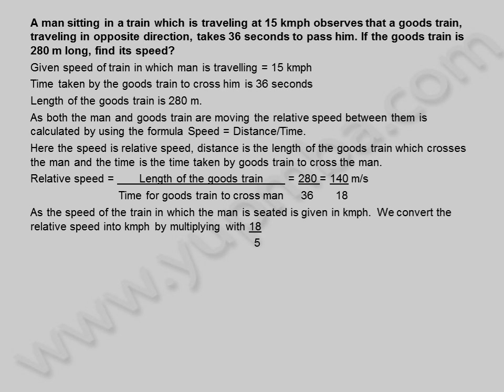As the speed of the train in which the man is seated is given in kilometers per hour, we convert the relative speed into kilometers per hour by multiplying with 18 by 5. Relative speed is equal to 140 divided by 18 into 18 divided by 5, which is equal to 28 kilometers per hour.